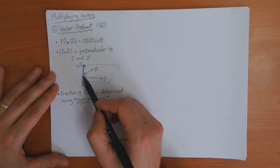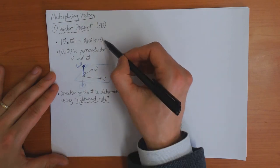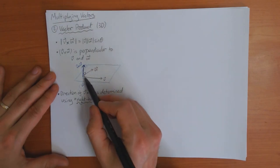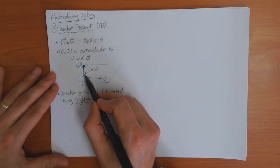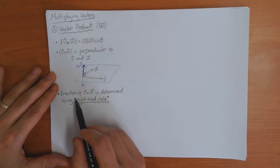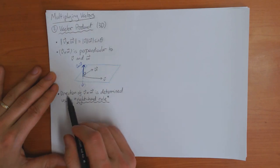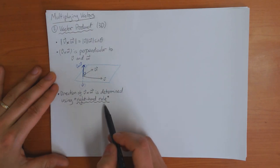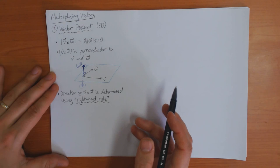So this uniquely defines the vector product. I've told you how long it should be, I've told you it should be perpendicular to v and w, and finally I've told you to choose the direction using the right-hand rule.